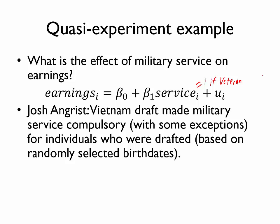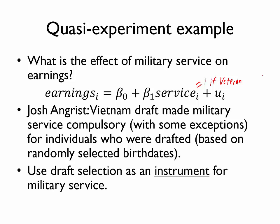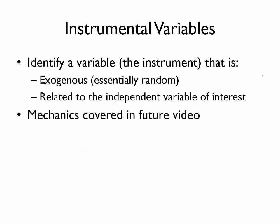So the solution that Josh Angrist used is the instrumental variables technique. And we would say that he used draft selection as an instrument for military service. So to go into a little bit more detail on this instrumental variables technique, the first thing we have to do to apply instrumental variables is to identify a variable, which we call the instrument, that satisfies two criteria.